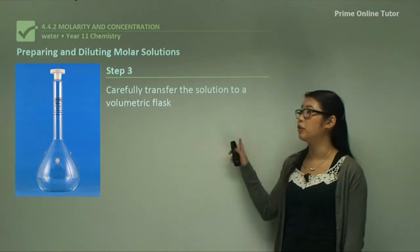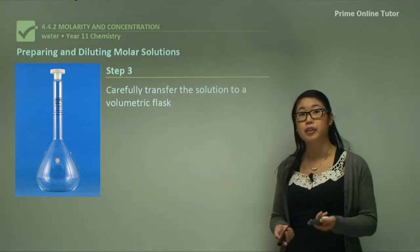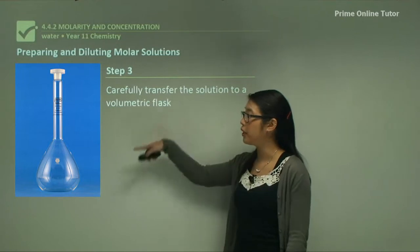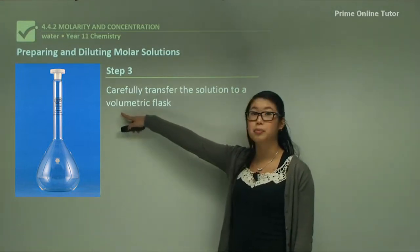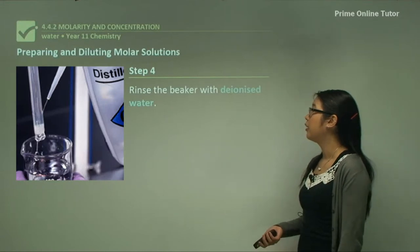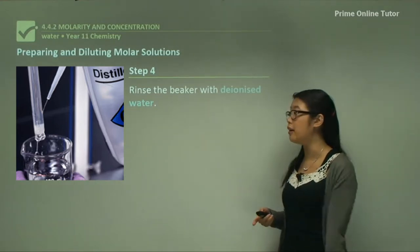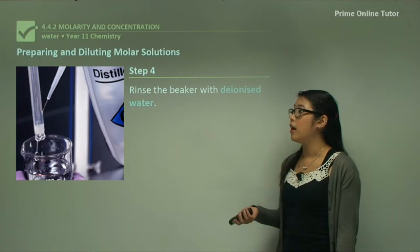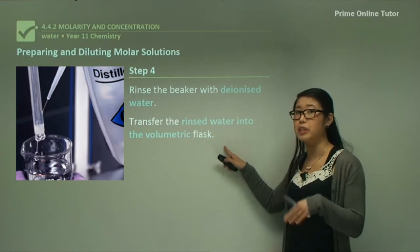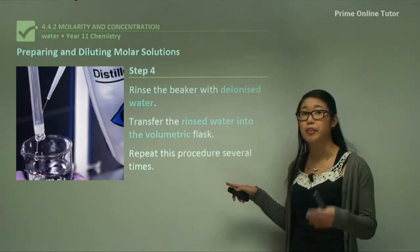Step 3: carefully transfer the solution into a volumetric flask. A volumetric flask is very accurate — more accurate than a measuring cylinder. Pour in your concentrated solution, then fill it up to the specific engraved line, giving you a very precise volume. Rinse the beaker with water several times to make sure all the solute is transferred into the volumetric flask.